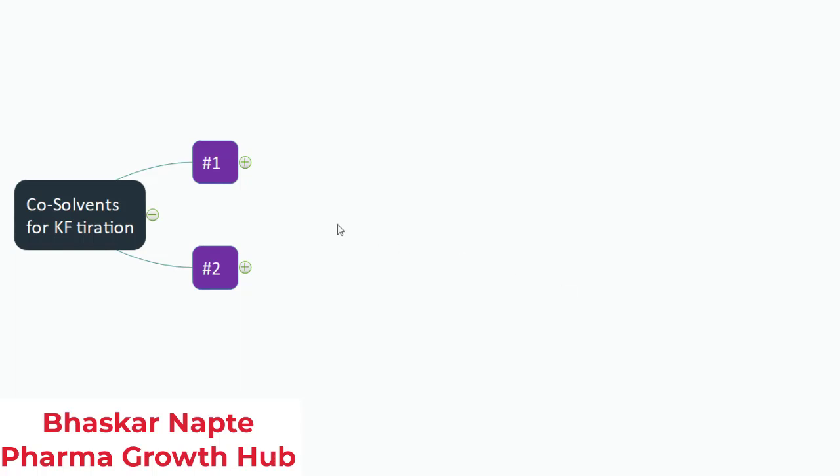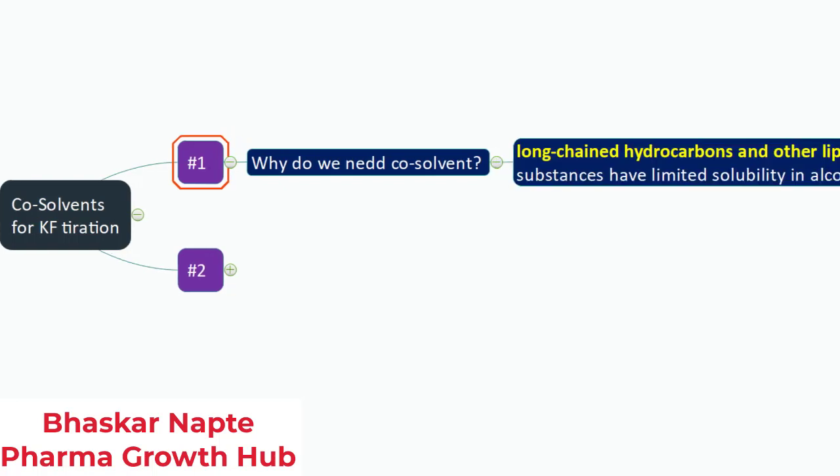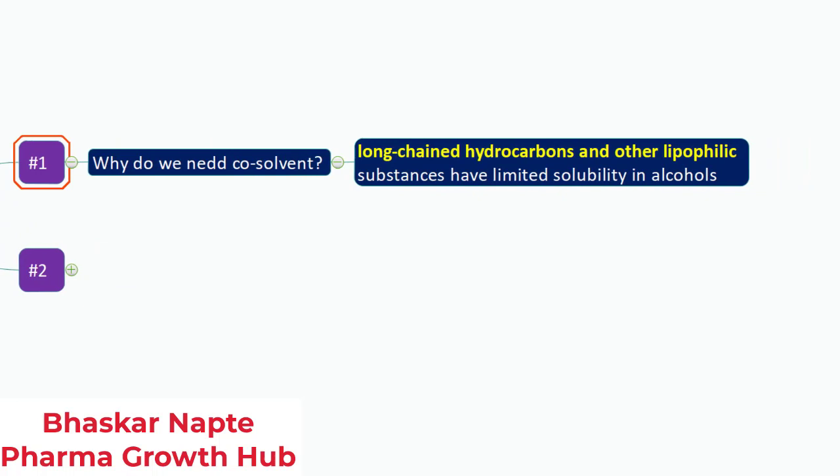So what kind of compounds are generally found to be insoluble in alcohol, making the use of a co-solvent necessary? If you look at long-chain hydrocarbons or lipophilic compounds, these substances have limited solubility in alcohols, and the same will be the case for methanol. So if a sample is a long-chain hydrocarbon or lipophilic in nature, check the solubility in methanol — if it is not soluble, this is the right time to think about using a co-solvent.